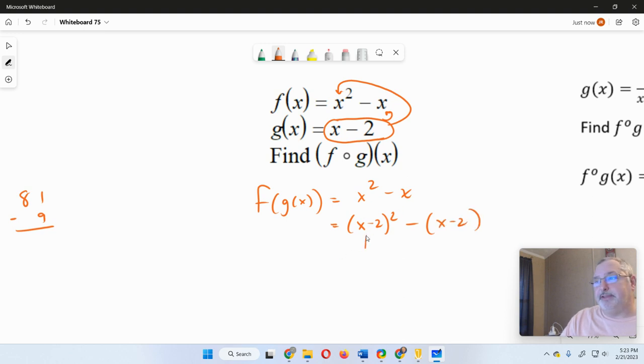And so we'll have x minus 2 squared minus x minus 2. And so we'll have to simplify this. x minus 2 times x minus 2, then minus x minus 2. A lot of x minus 2 is there. So again, FOIL. So that's x squared minus 2x minus 2x plus 4 minus x plus 2.